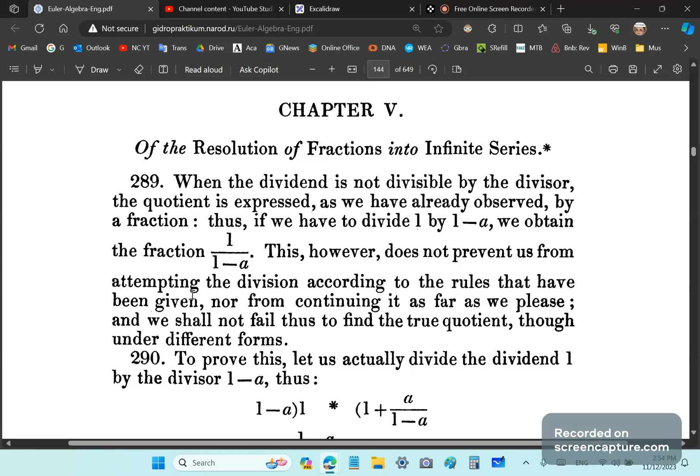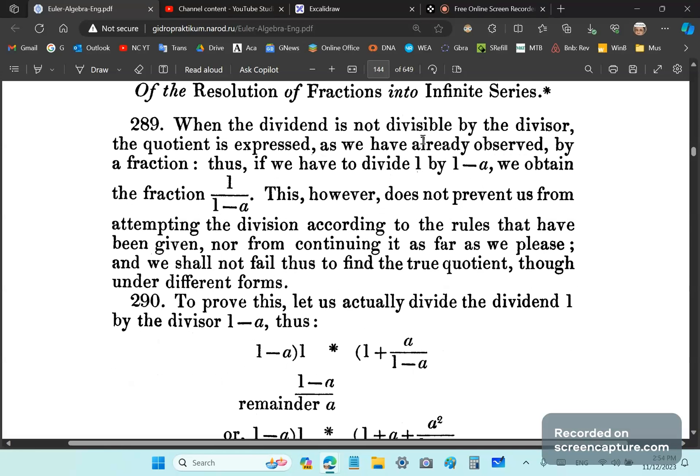So if we look at his Article 289, this is the first big blunder that he made. He said, when the dividend is not divisible by the divisor, the quotient is expressed, as we have already observed, by a fraction. Thus, if we have to divide 1 by 1 minus a, we obtain the fraction 1 over 1 minus a.